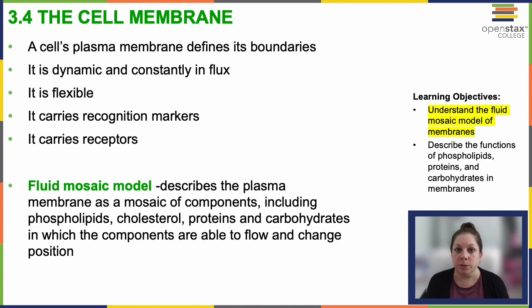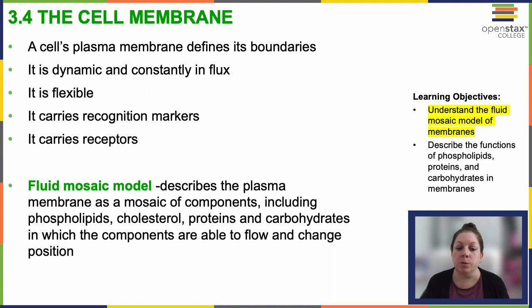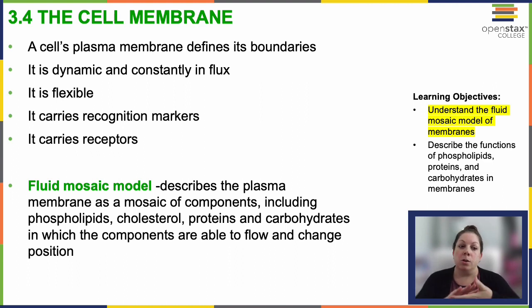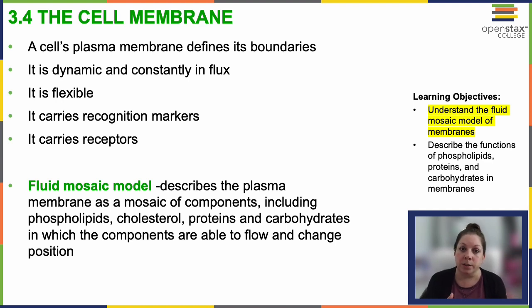They are also covered in receptors, which play a role in these different signaling pathways. We use the fluid mosaic model to describe the plasma membrane as a mosaic of components, including phospholipids, cholesterol, proteins, carbohydrates — all that can flow and move and change across the cell membrane. In fact, we even see particular areas of the cell membrane may have more of a certain type of protein than other sides of that same cell.